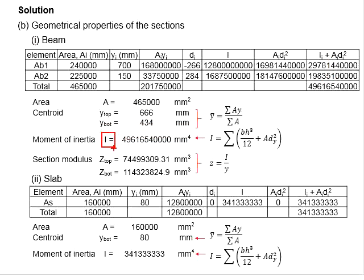Based on the I that you have obtained, divide it with the centroid of the top and the bottom. You are able to determine the section modulus for the top and the bottom of the precast element.